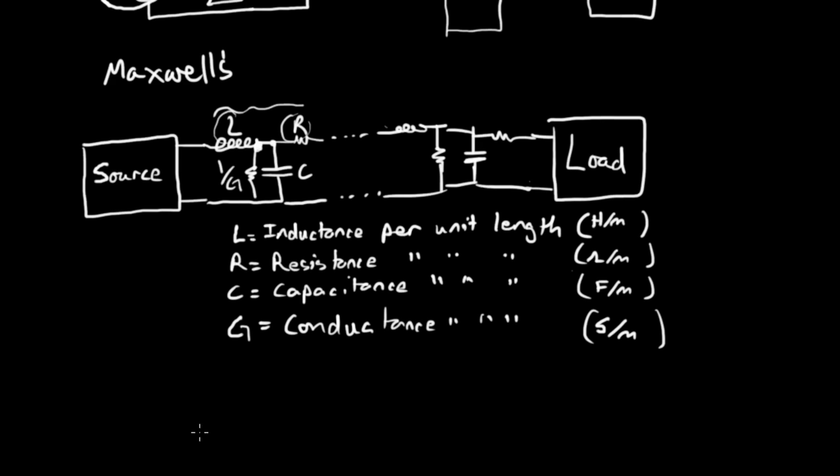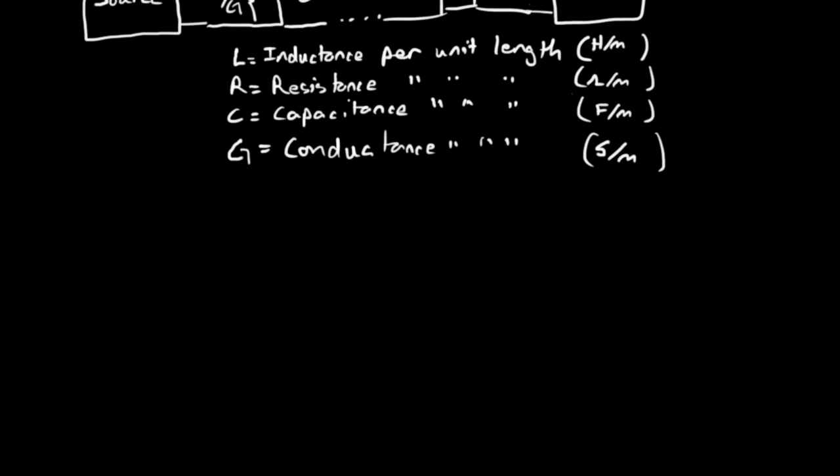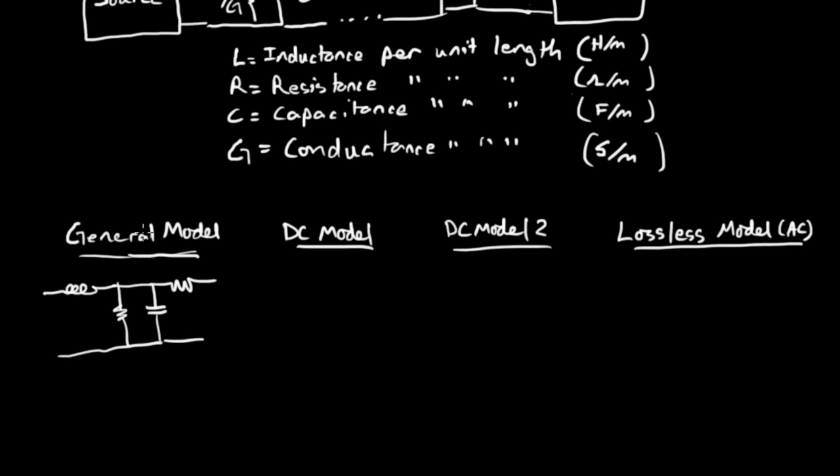Now let me scroll down and redraw things a little bit, four different cases of the transmission line. And I scroll down. I'm going to draw four models. We have the general model, the general transmission line model, the model per unit length, and that's exactly what I drew up above. So that's this guy here, we have the inductor, the conductance, the capacitor, and the resistance.